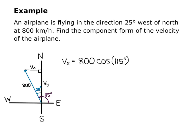And then, if I have the angle from the positive x axis, then I know that the x component at the end of that vector is v sub x equals 800 cosine of 115 degrees. And the y component, v sub y equals 800 times sine of 115 degrees.